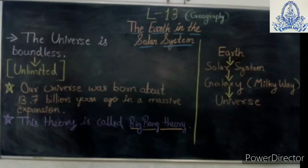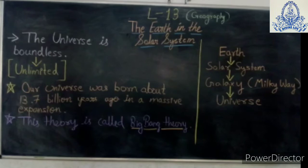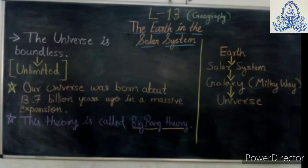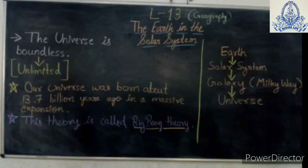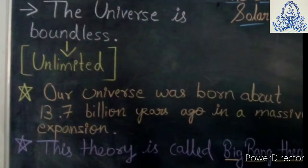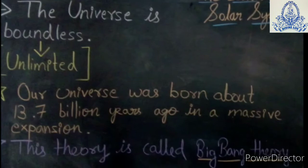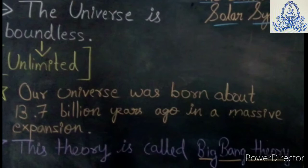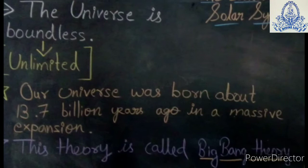We already understand the introduction part, now we move with the lesson. First, we talk about the universe. The universe is boundless, meaning unlimited. It includes all matter like stars, planets, satellites, etc. Most scientists accept the theory of the birth of the universe, which is called the Big Bang Theory.